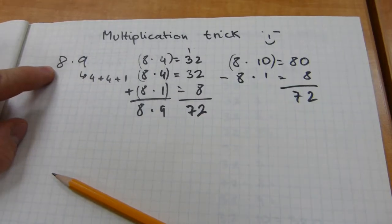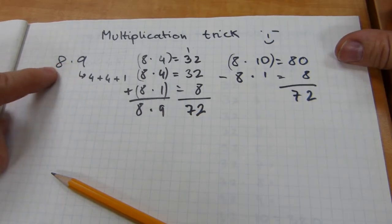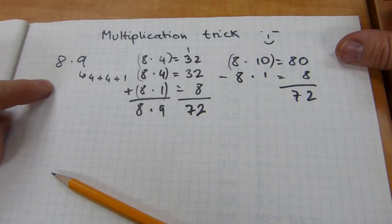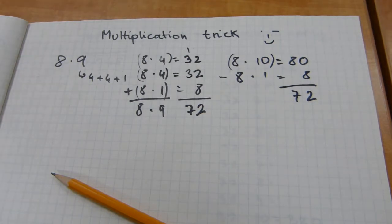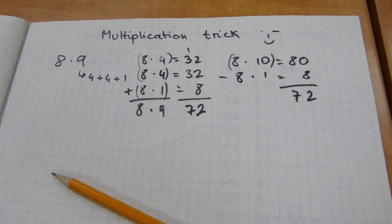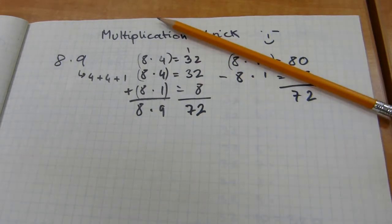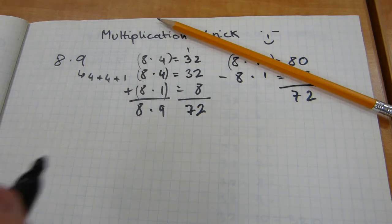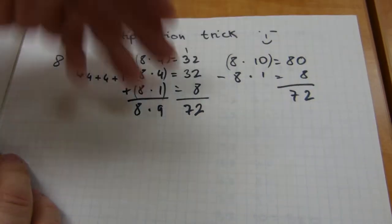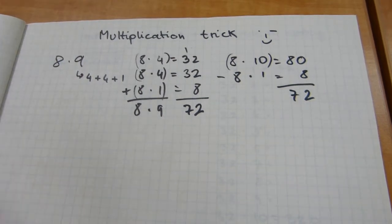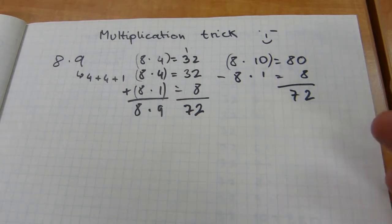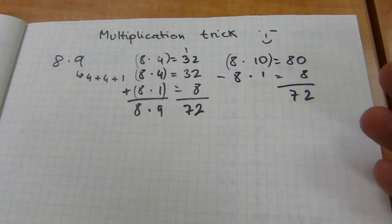It doesn't have to be the 9 either. If the only multiplication fact you remember is 9 times 3 is 27, then since 8 is 3 plus 3 plus 2, and if you don't remember what 2 times 9 is, just write down 9 plus 9. Then add 27 plus 27 plus 9 plus 9 and you'll end up with 72 the same way. Now let me show you a 2-digit version — nobody memorizes, say, a 2-digit times table, but even up to 12 by 12.